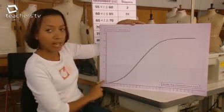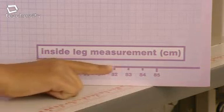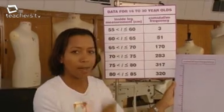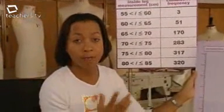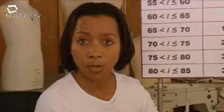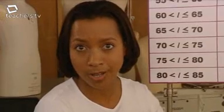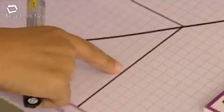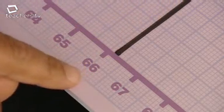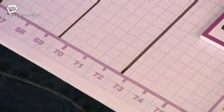Remember, cumulative frequency always goes on the vertical axis, and the measurement always goes on the horizontal axis. OK, now for some analysis. The three vital statistics we can estimate are the median, the lower quartile, and the upper quartile. The median is 69.5. The lower quartile is 66.2. The upper quartile is 72.7.